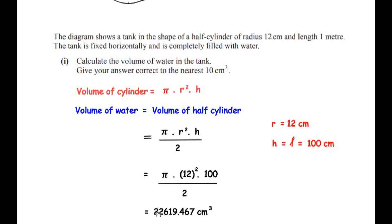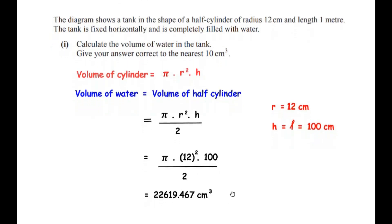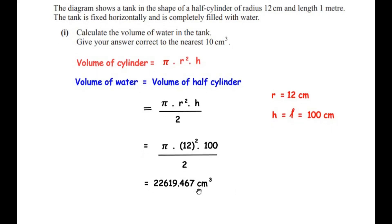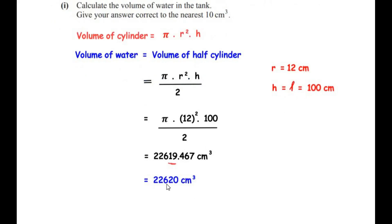This gives 22619.467 cm³. Since we have to round to the nearest 10 cm³, we look at the last two digits before the decimal point. The nearest ten to 19 is 20, so we round and write the answer as 22620 cm³. This is the volume of water in the half cylinder.